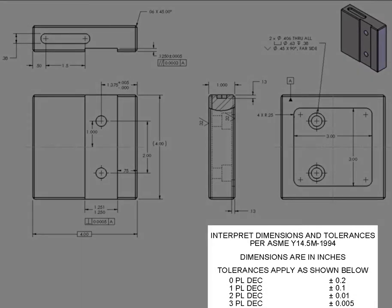The remaining feature sizes are all controlled by the symmetric tolerances listed in the general tolerance table. Any dimensions which are whole numbers and do not have any decimal places will have a tolerance of 0.4. All dimensions with one decimal place will have a tolerance of 0.2, those with two decimal places a tolerance of 0.02, and those with three decimal places a tolerance of 0.01 inches.